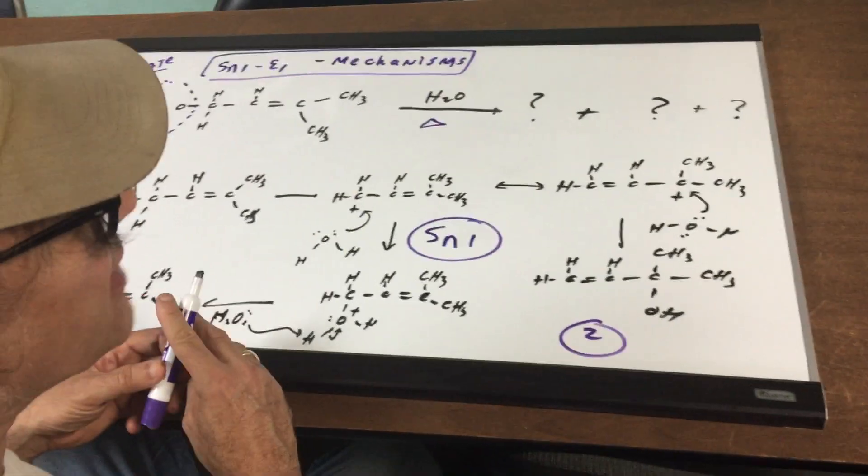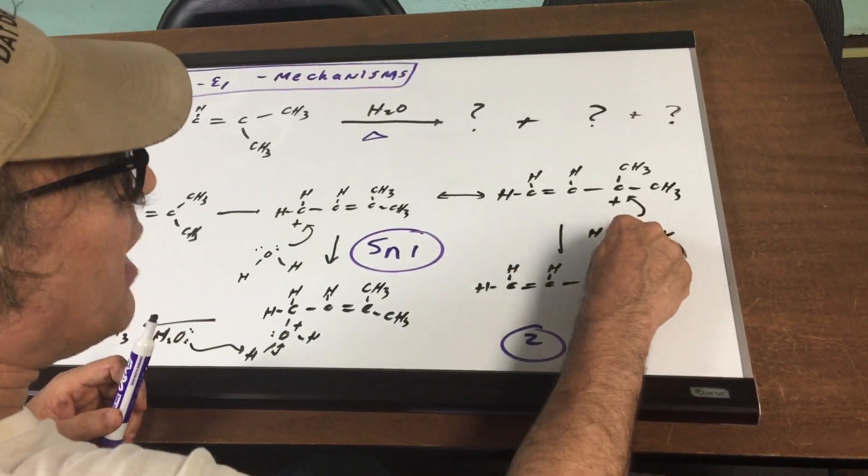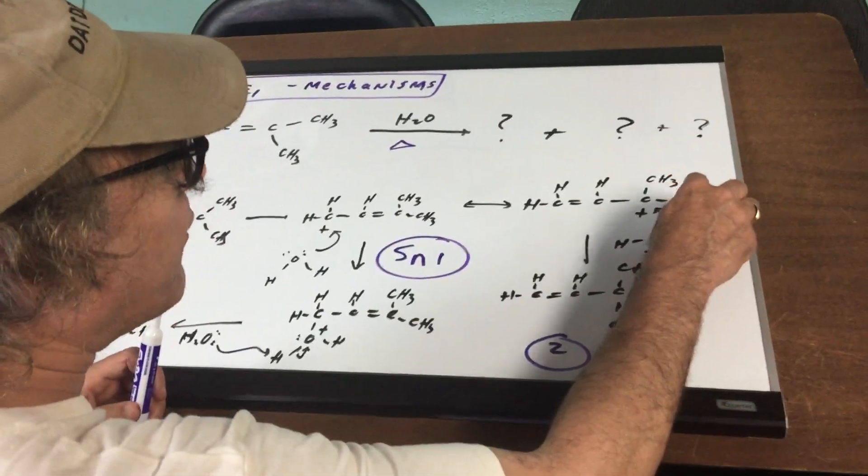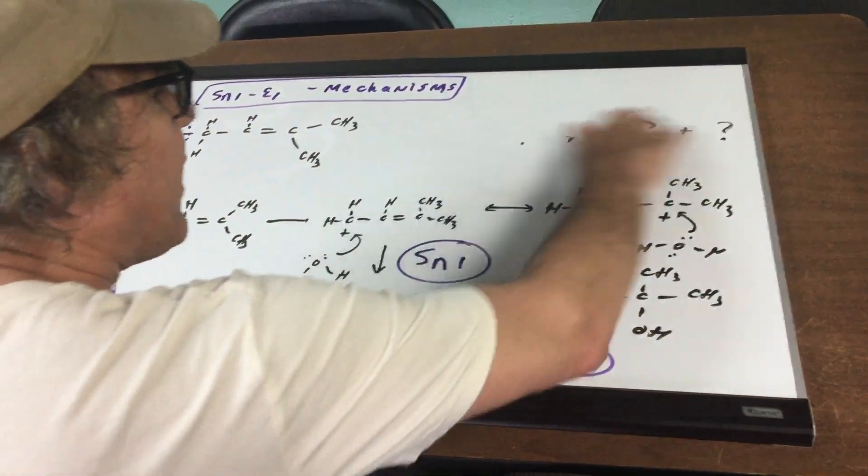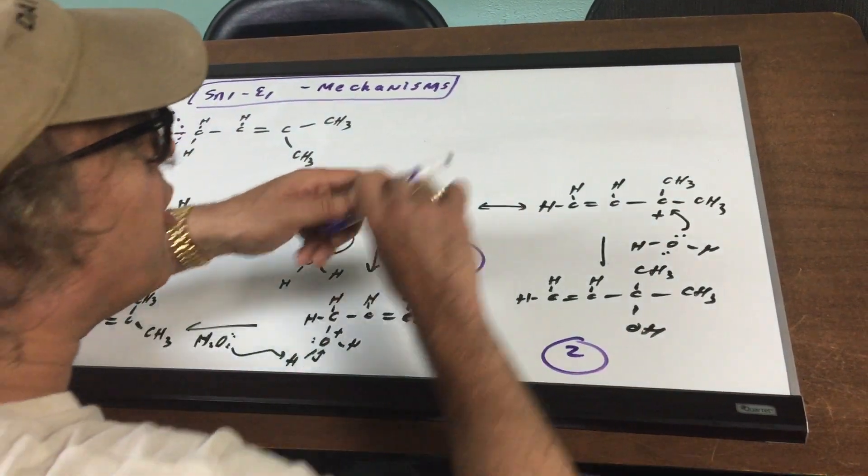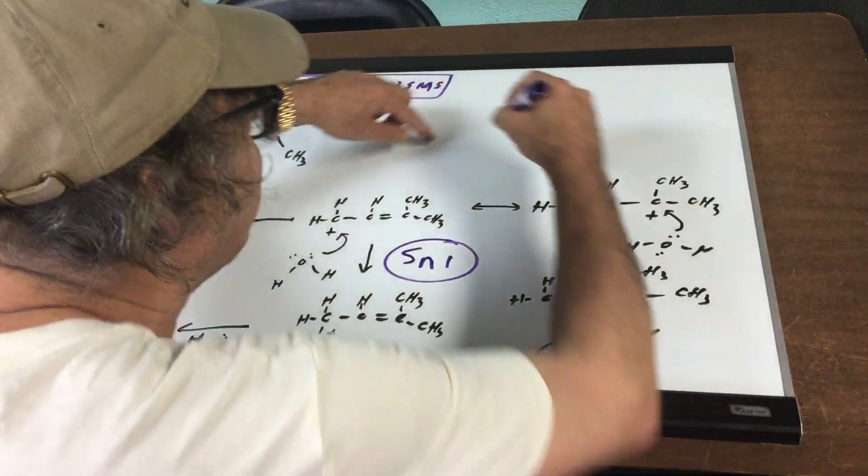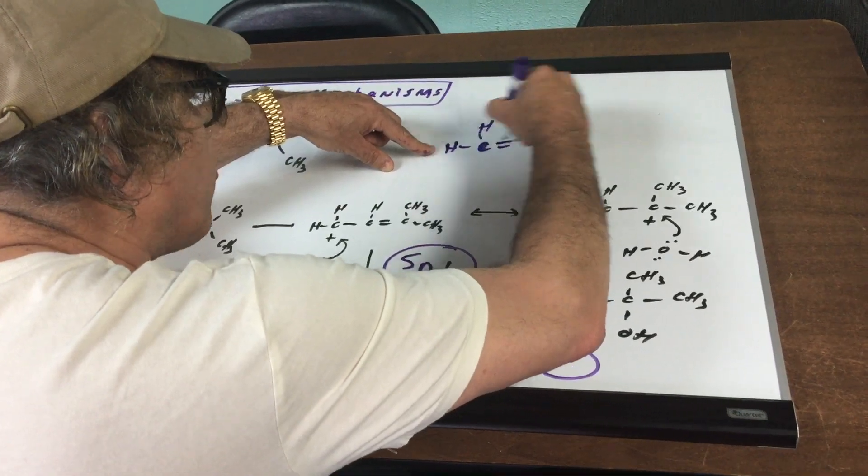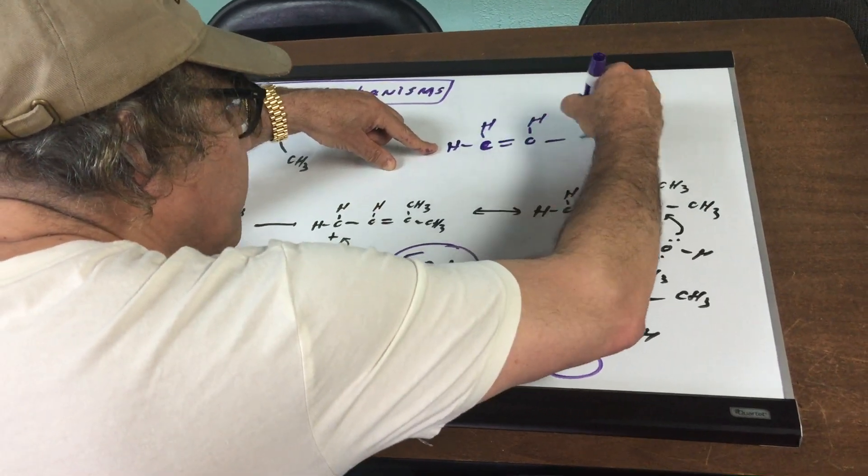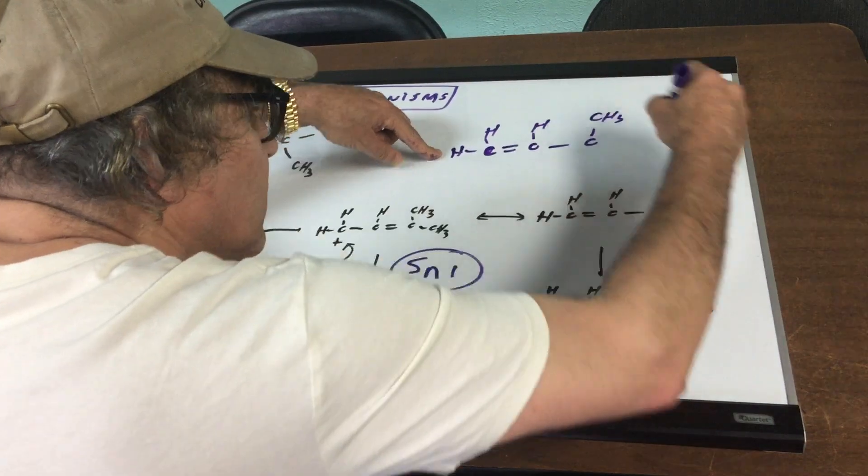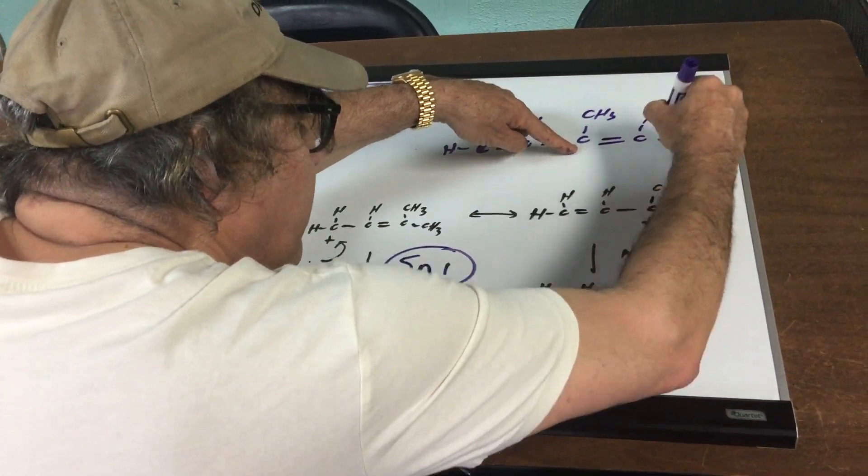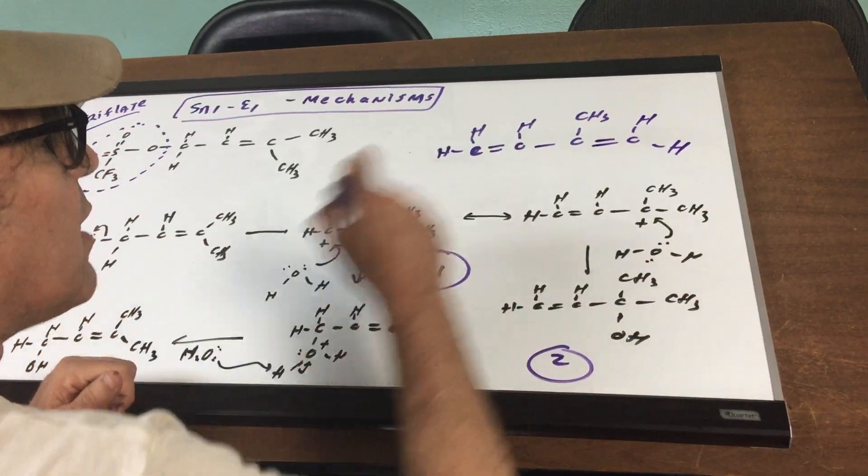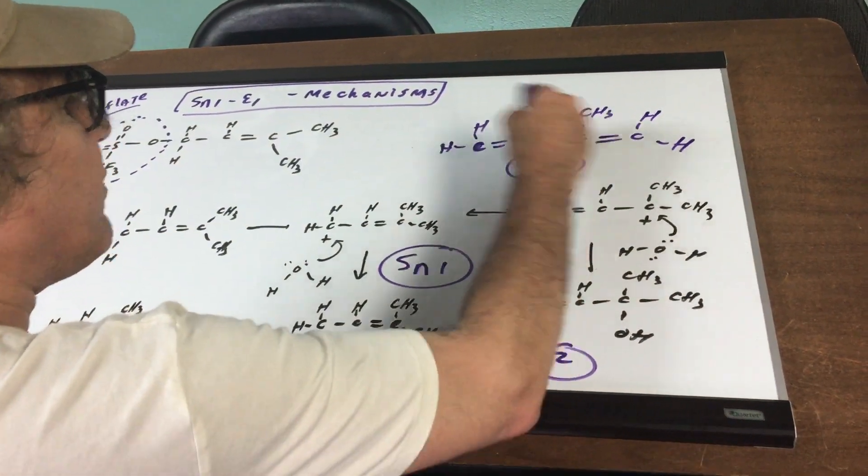The E1 mechanism is pretty easy. Instead of water attacking this carbocation, it could have pulled off one of the H's. So, I'll go up here and I'll show you what we could have got. If you pulled off the H, you would have got this for the other product, which would have been a minor product. We have this, and then you would have got this because you would have pulled off one of the H's. And that would have been the E1.